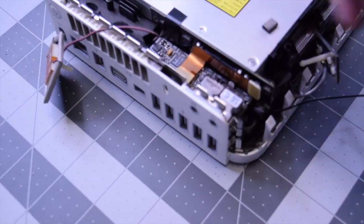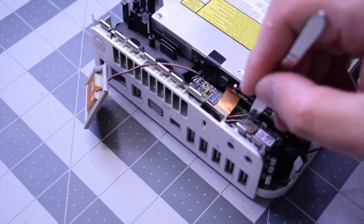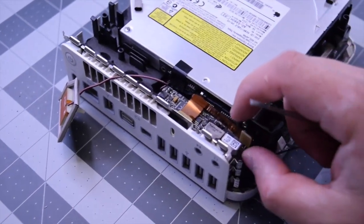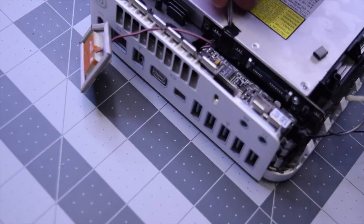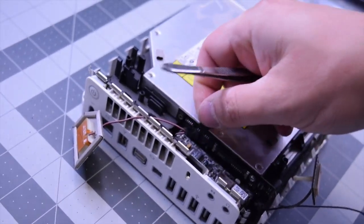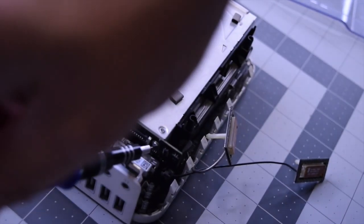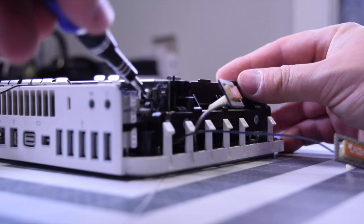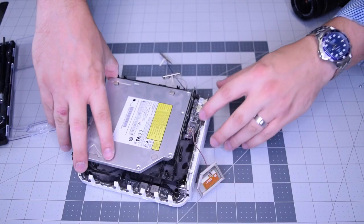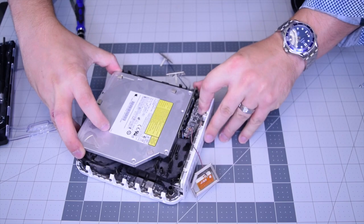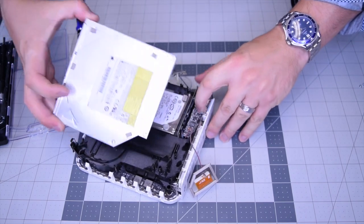Now we need to peel back and disconnect that bridge ribbon cable right there. Gently disconnect that, peel back that little piece of tape, and now the fifth and final screw right behind there. That will release the DVD drive and that should be able to slide out just like that.